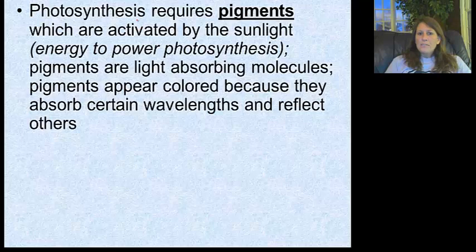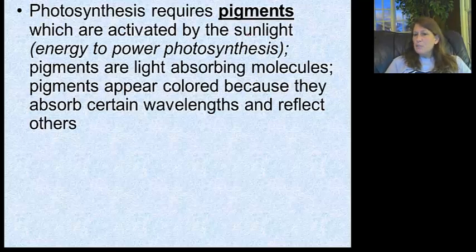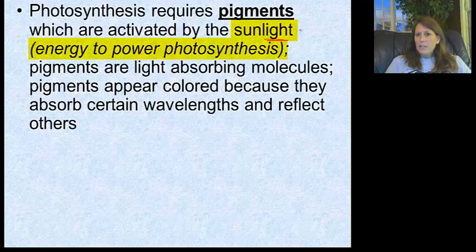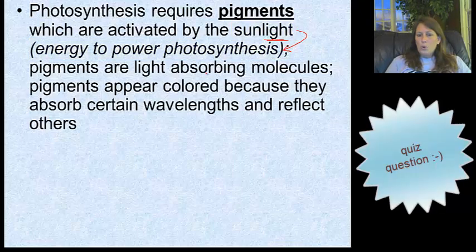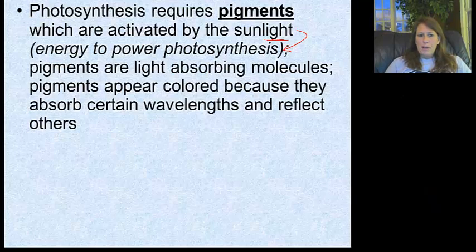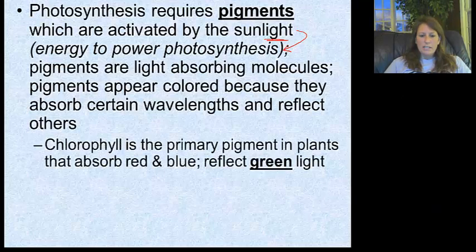For photosynthesis to take place, plants really need pigments embedded in the thylakoid membrane. If there's no sunlight, photosynthesis is obviously reduced, but some sunlight gets through even clouds. The energy that powers photosynthesis is the sun. These pigments absorb the light. Chlorophyll, the primary pigment, absorbs red and blue wavelengths — we've talked about wavelengths absorbing some and reflecting others — and those are the two main ones.